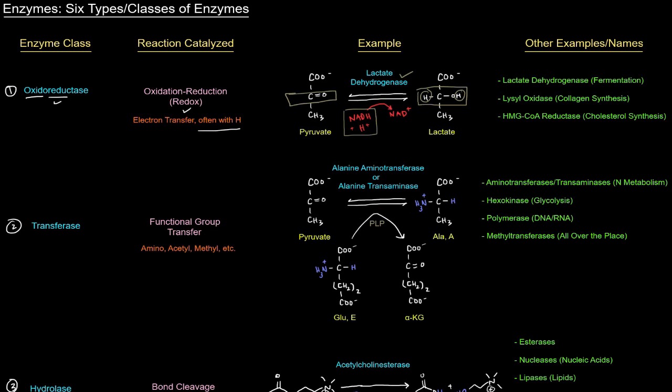A lot of oxidoreductases will be called dehydrogenases, like lactate dehydrogenase, which shows up in fermentation. You might also come across oxidases, like lysyl oxidase — that should make sense, as an oxidation is occurring. Lysyl oxidase shows up in collagen synthesis. HMG-CoA reductase catalyzes a reduction reaction and is the rate-limiting step of cholesterol synthesis. So if you see a dehydrogenase, an oxidase, or a reductase, there's a redox reaction happening.